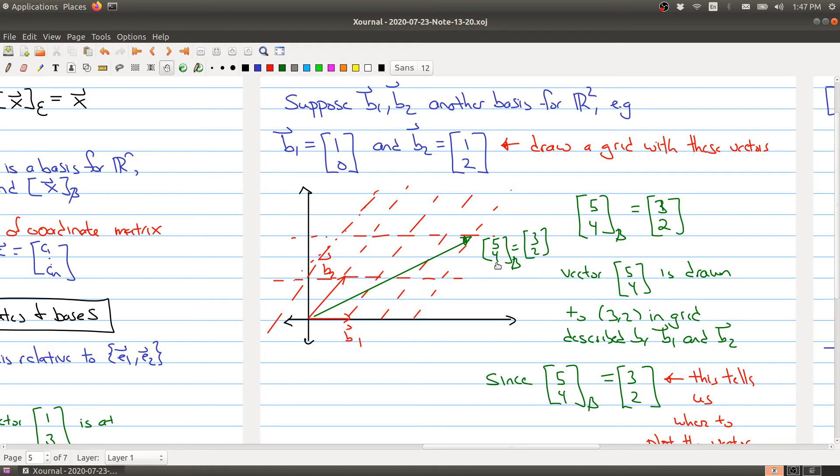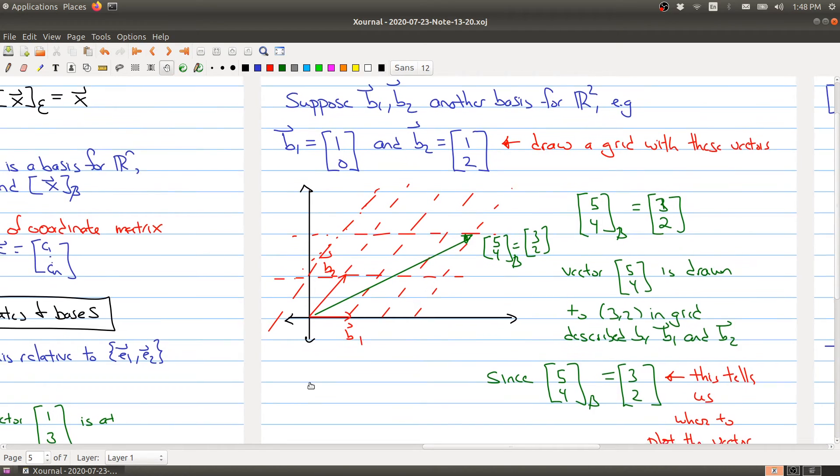So you could always take 5, 4, your vector you're interested in, you change the bases, and you'd always be changing this part, which is telling you, as you change the grid, you have to change where the end point is. But you're not changing the vector 5, 4. Okay. So let me just kind of summarize some of these ideas here.